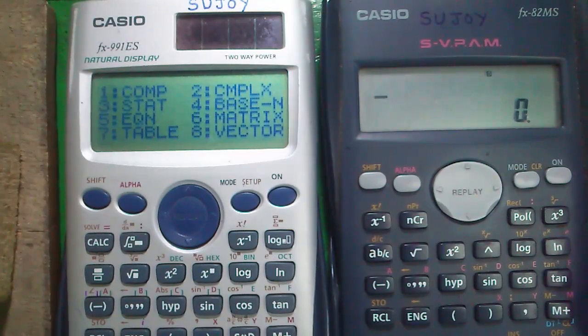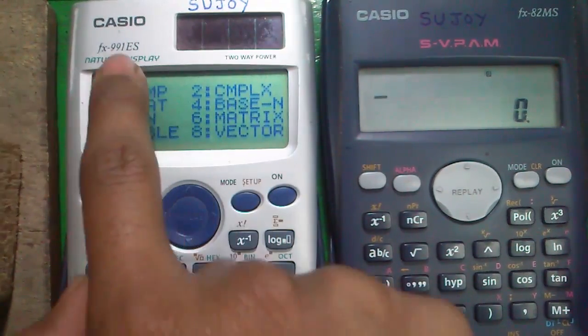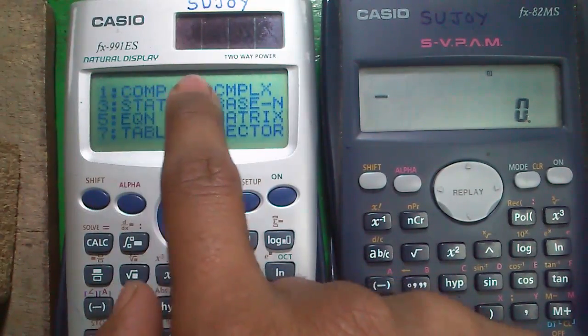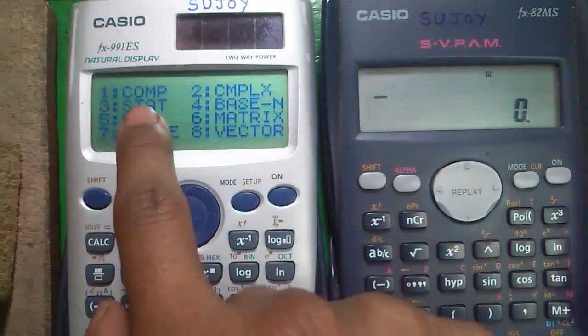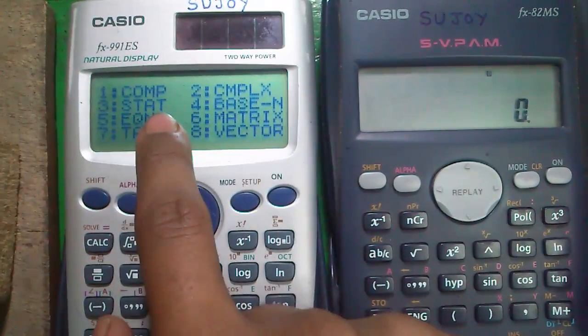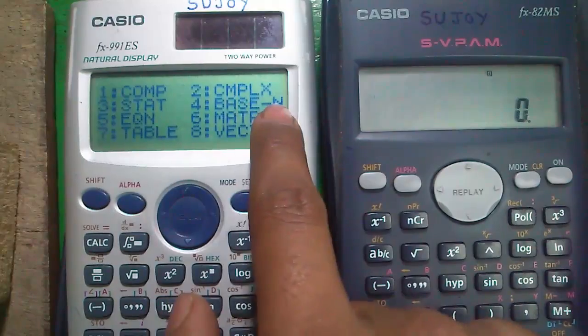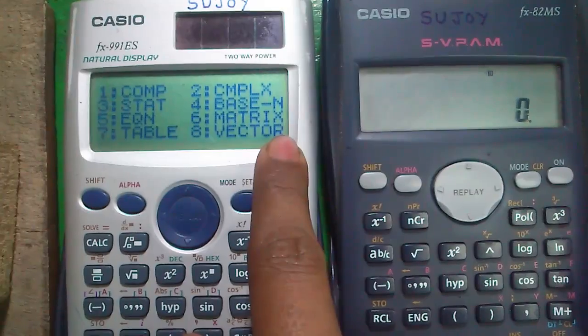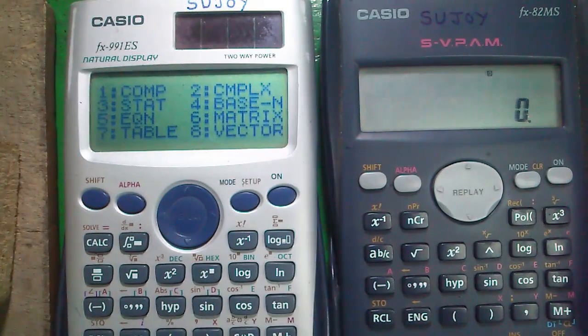Also, I have uploaded videos on all the 8 modes of this Casio FX-991 ES scientific calculator. Mode 1 computational mode, Mode 2 complex number mode, Mode 3 statistics mode, Mode 4 number system mode, Mode 5 equation solver mode, Mode 6 matrix calculation mode, Mode 7 table generator mode, Mode 8 vector algebra mode.